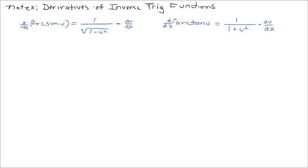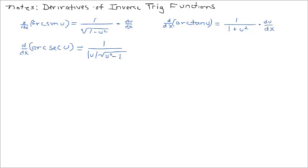Now let's take a look at the derivative of arcsecant — you might also see it written as secant to the negative one. Consider this composite arcsecant function that we want to differentiate, perhaps because we're interested in the slope. The derivative of this composite function is: 1 over the absolute value of the inside function u, times the square root of u squared minus 1, all multiplied by du over dx. Again you may see this stacked with u prime on top.